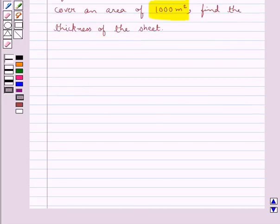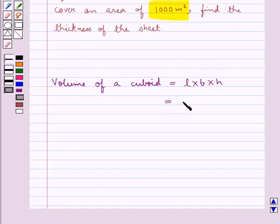Before moving on to the solution, let's recall the formula for the volume of a cuboid. This is equal to L into B into H, or we can also say this is equal to area of the base of the cuboid into H.